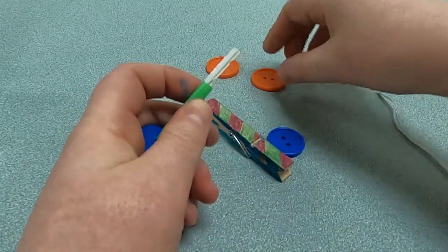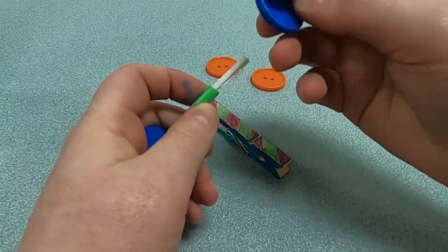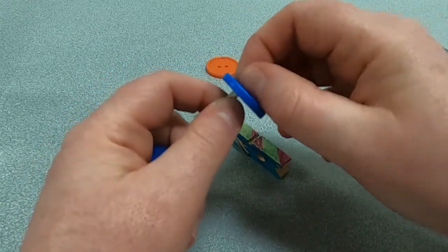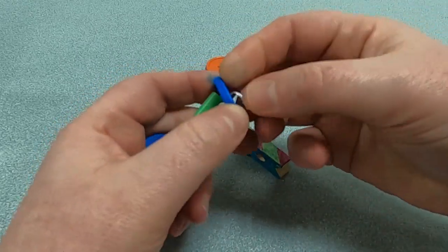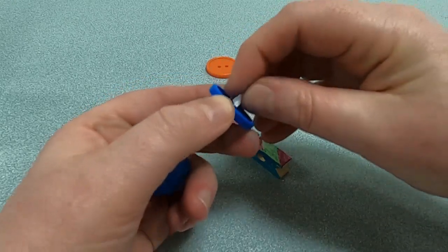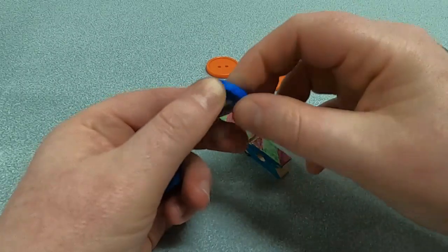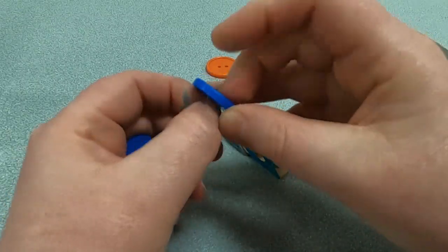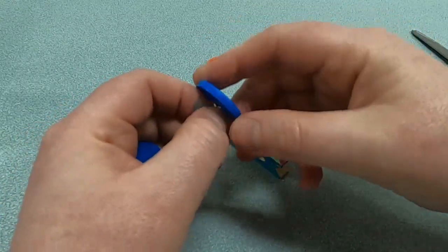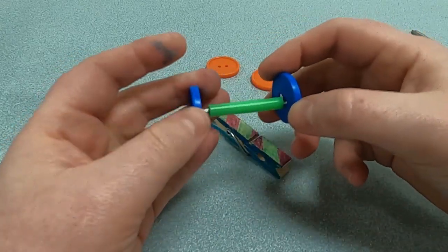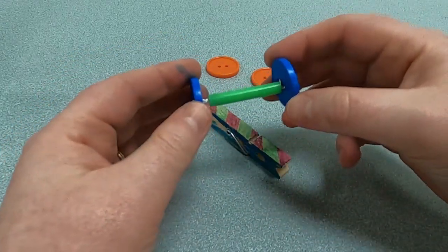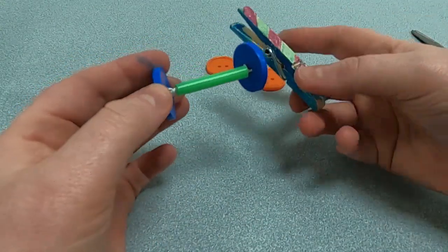Then the next step is we'll take our other blue button and we're going to do the same thing we did to the other side. Fold it in, make it go through the other hole. A little trickier for the second one, but you might have to do it a couple times to get it right, and then twist it together.